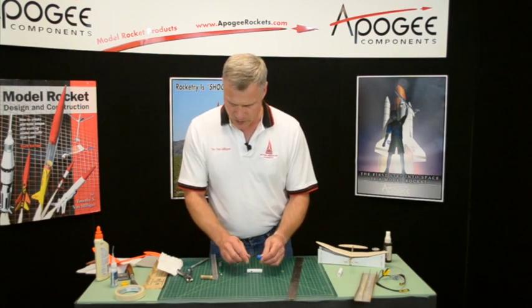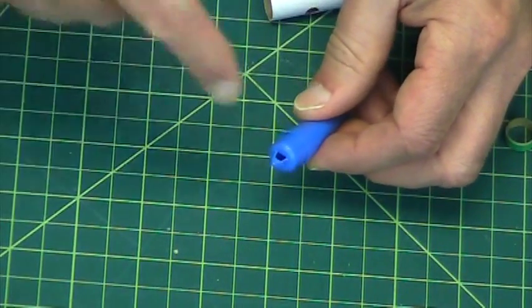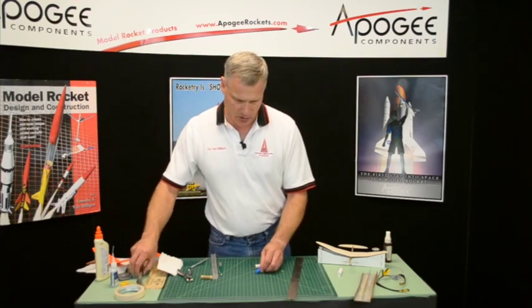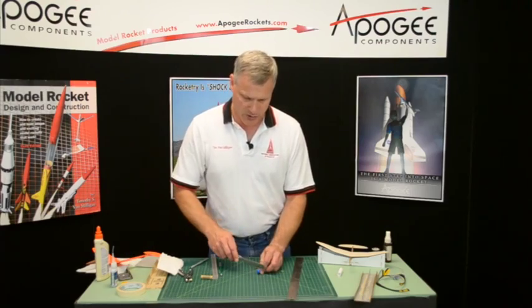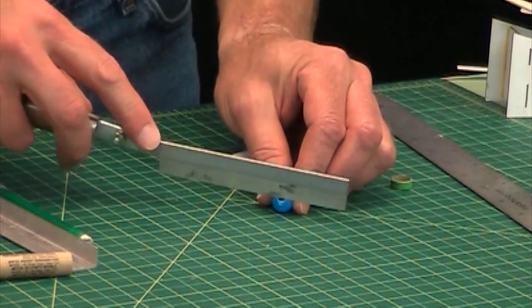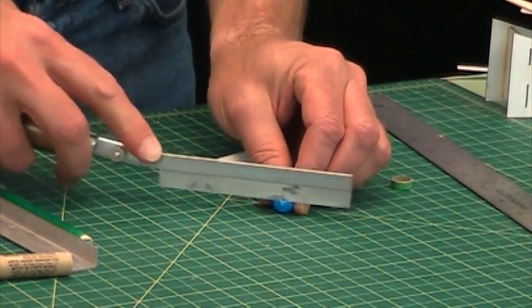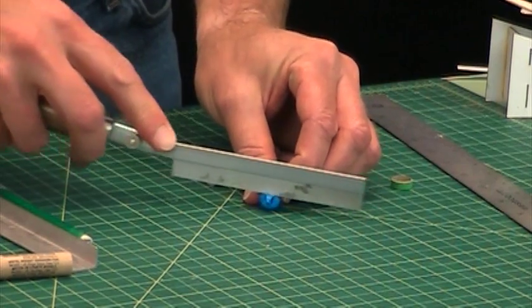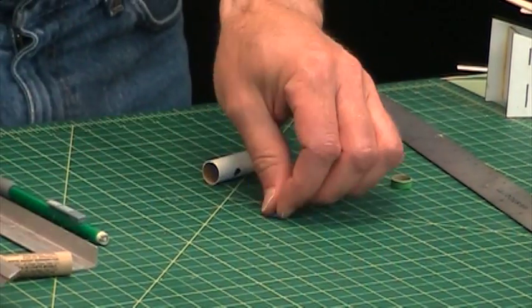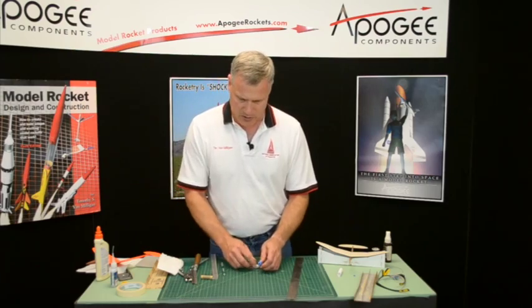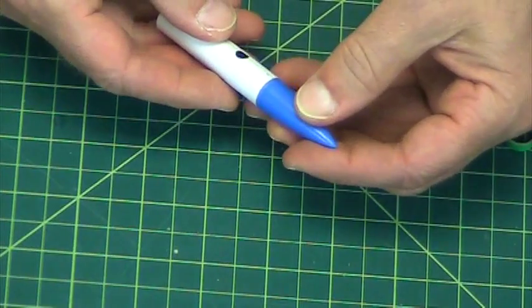On the nose cone, this tab here is going to be cut off. That's why I have the razor saw. You can use a hobby knife for this too. Razor saw goes a little bit quicker. We don't need that parachute loop on this rocket so we'll just cut it off.